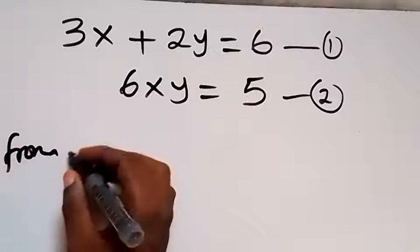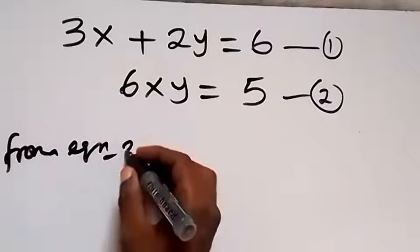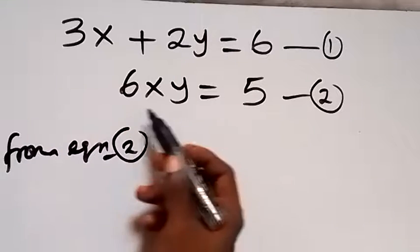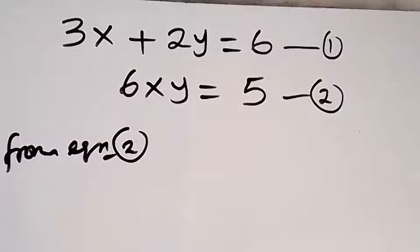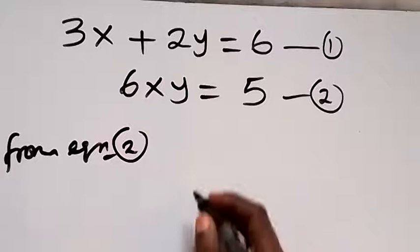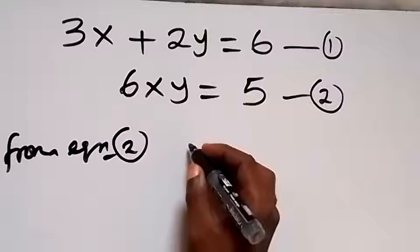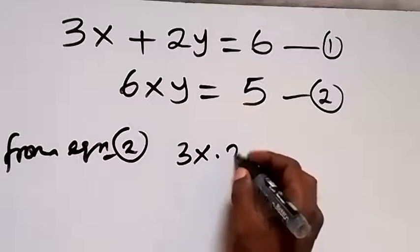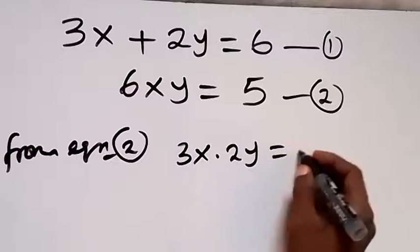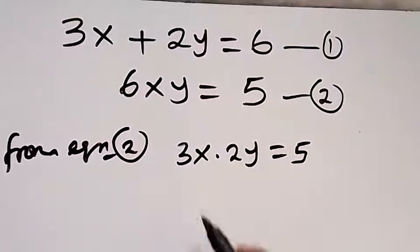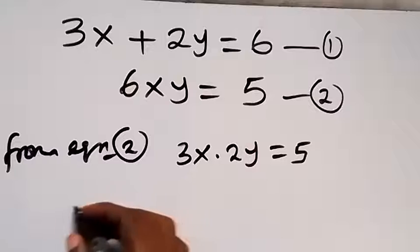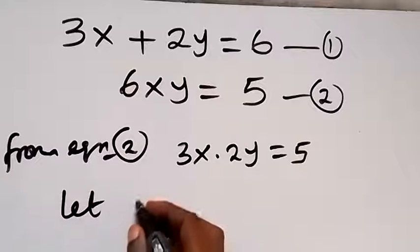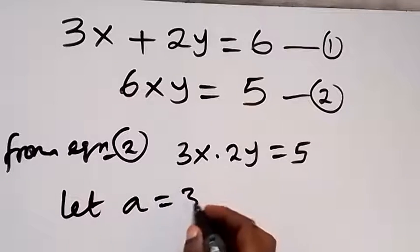From equation 2, we can write 6xy equals 5 in another way. We can say this is 3x times 2y equals 5, which is the same thing as 6xy. Then let a be equal to 3x.